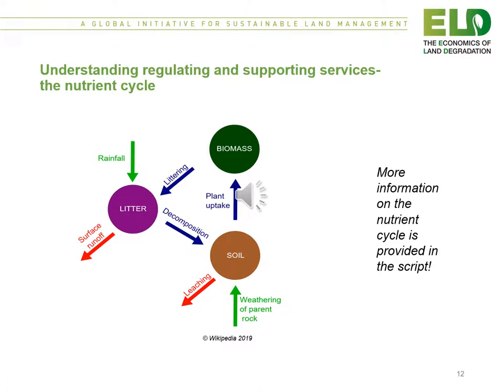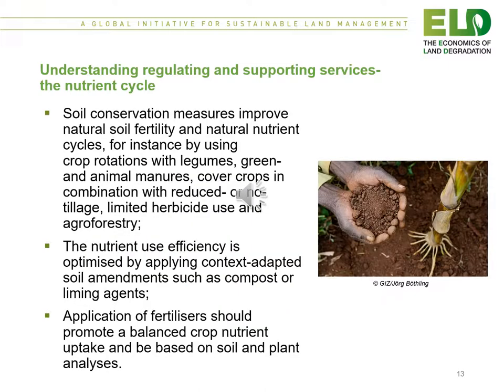We can also use diagrams on nutrient cycles to help us understand the role of regulating and supporting services. For example, soil conservation measures improve natural soil fertility and nutrient cycles. This can be achieved by using crop rotations with legumes, green and animal manures, cover crops in combination with reduced or no tillage, limited herbicide use and agroforestry. The nutrient use efficiency is optimized by applying context-adapted soil amendments such as compost or liming agents. The application of fertilizers should promote balanced crop nutrient uptake and be based on soil and plant analysis.